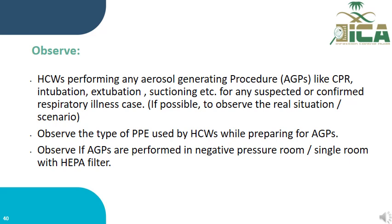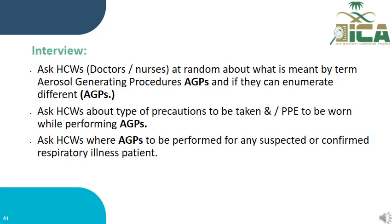Observe healthcare workers performing AGPs such as CPR, intubation, extubation, and suctioning for any suspected or confirmed respiratory illness. Ask healthcare workers — doctors and nurses — at random to define AGPs, enumerate different types, describe the type of precautions and PPE to be worn, and identify where AGPs should be performed for suspected or confirmed respiratory illness patients.